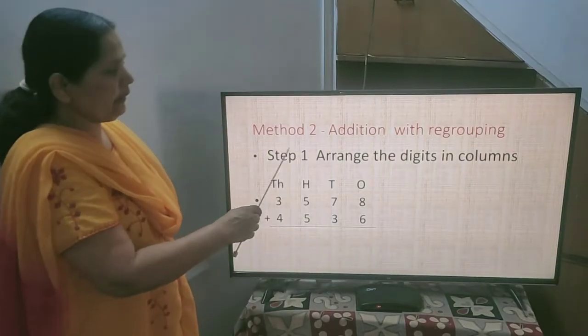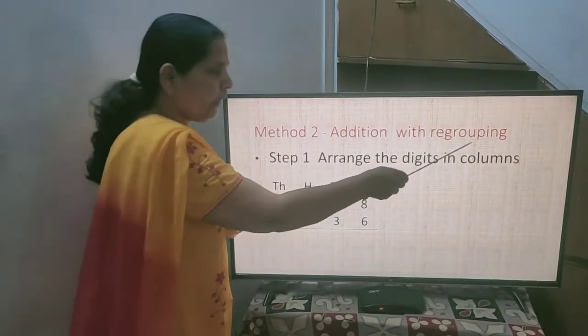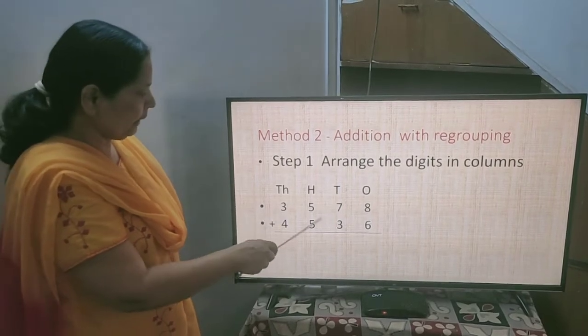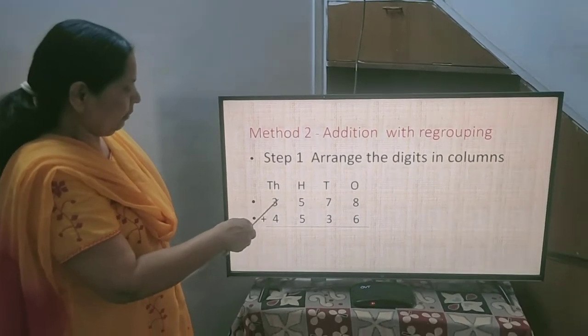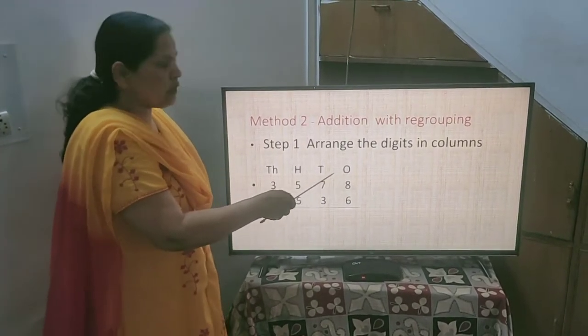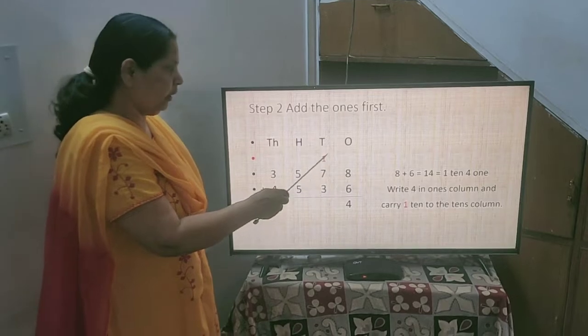Then second method is addition with regrouping. Here again you have to write the numbers in columns like this and then 1000s will come in 1000s columns, 100s, 10s and 1s. In this way you have to write it in columns.